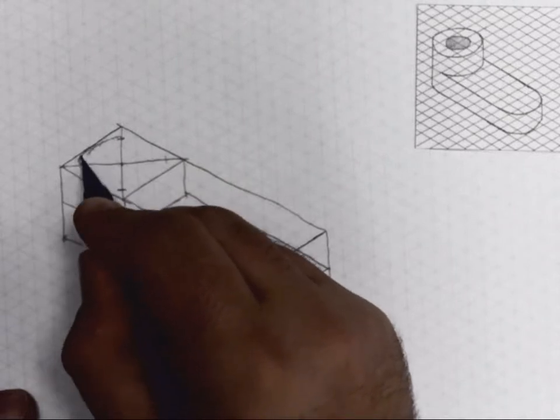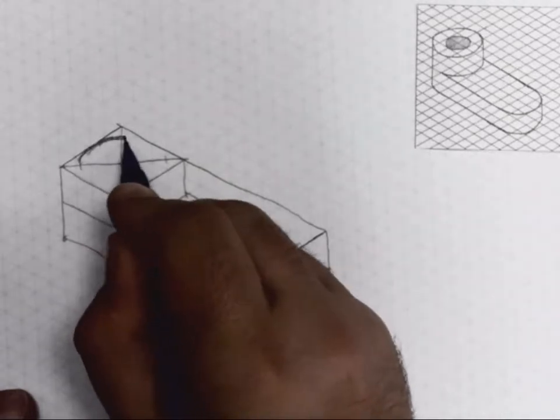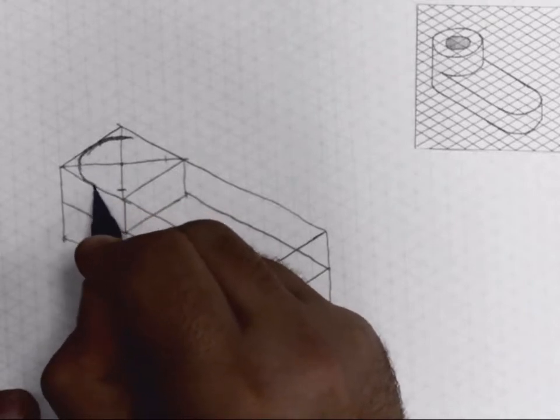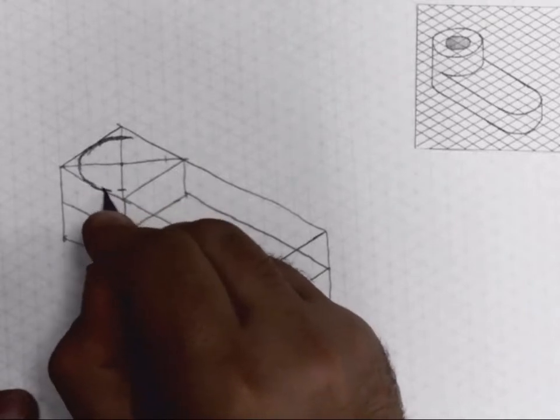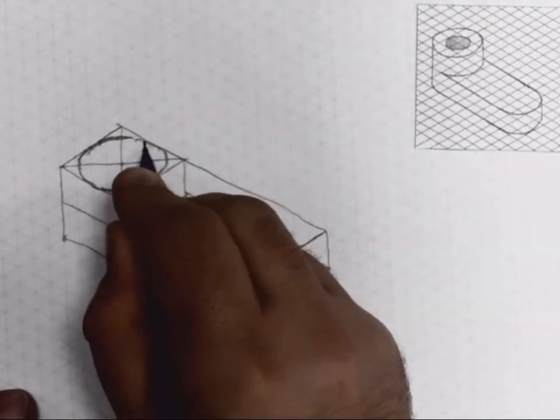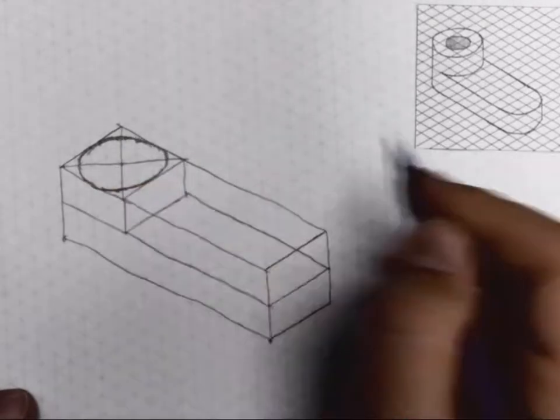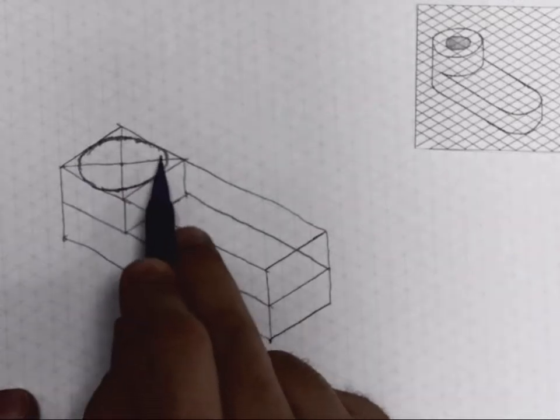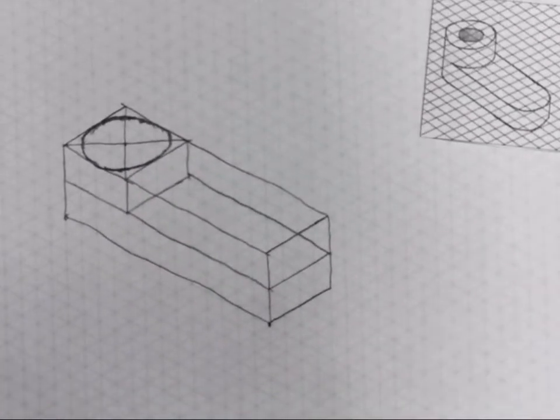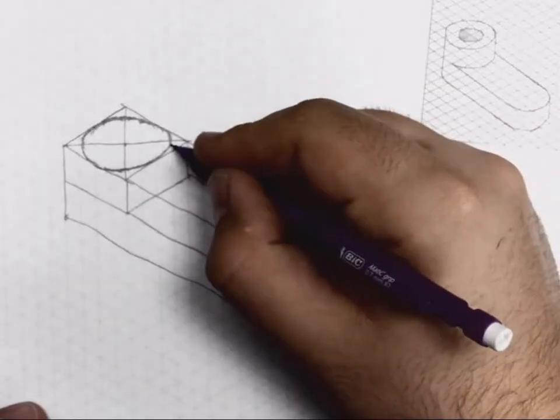When I do this it'll pass through it, so I'll get kind of an ellipse shape as I draw this. That's how circles look in an isometric orientation. This will come down and curve around.